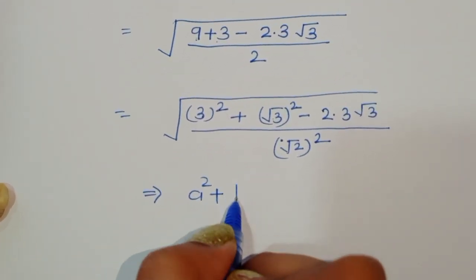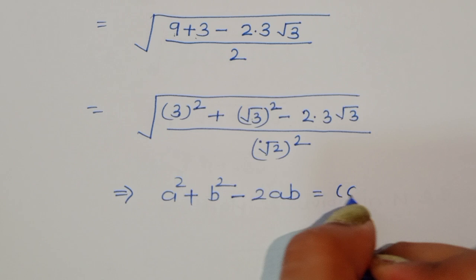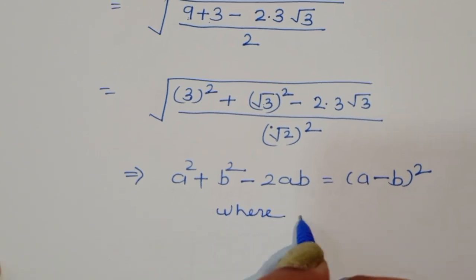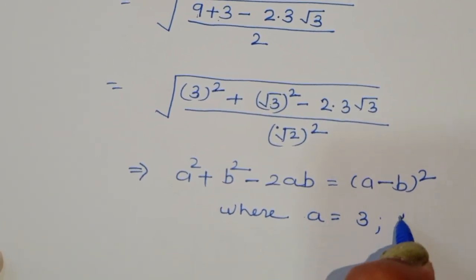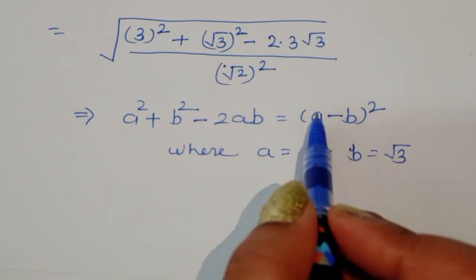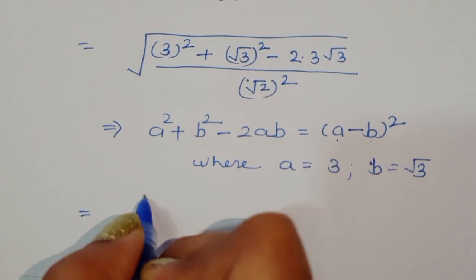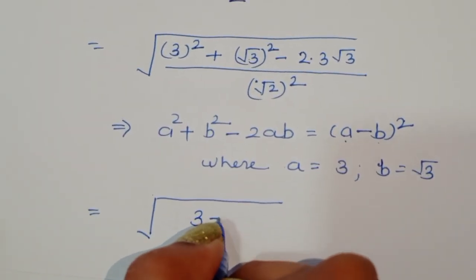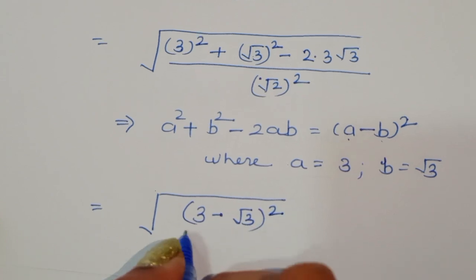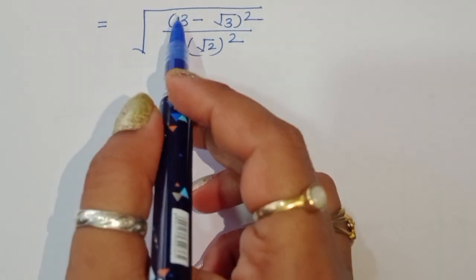Using the formula a squared plus b squared minus 2ab equals (a minus b) squared, where a equals 3 and b equals square root of 3, we convert the numerator into (a minus b) whole square form. So the numerator becomes (3 minus square root of 3) squared, divided by (square root of 2) squared.